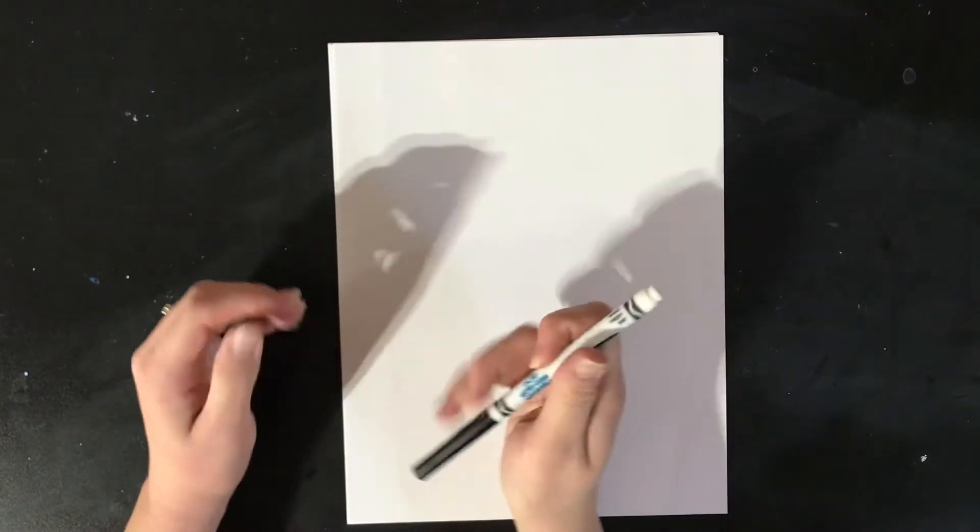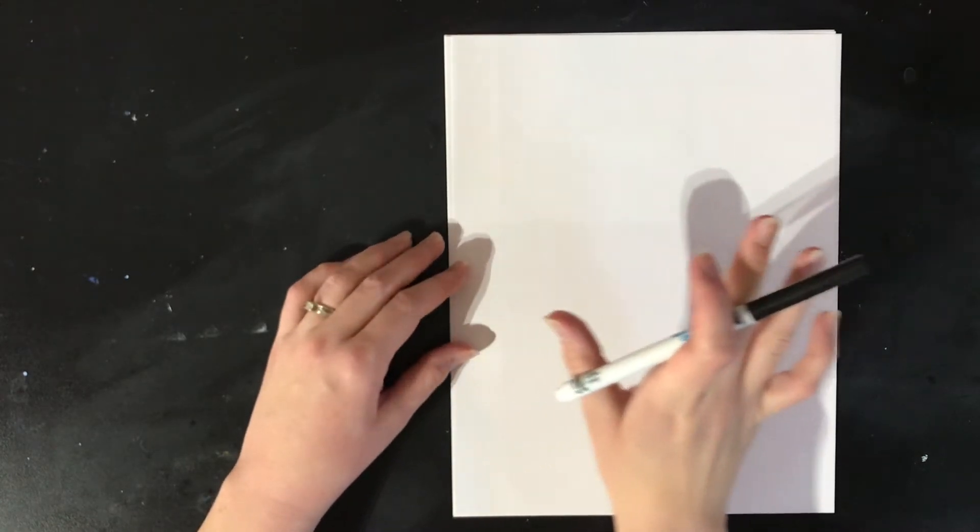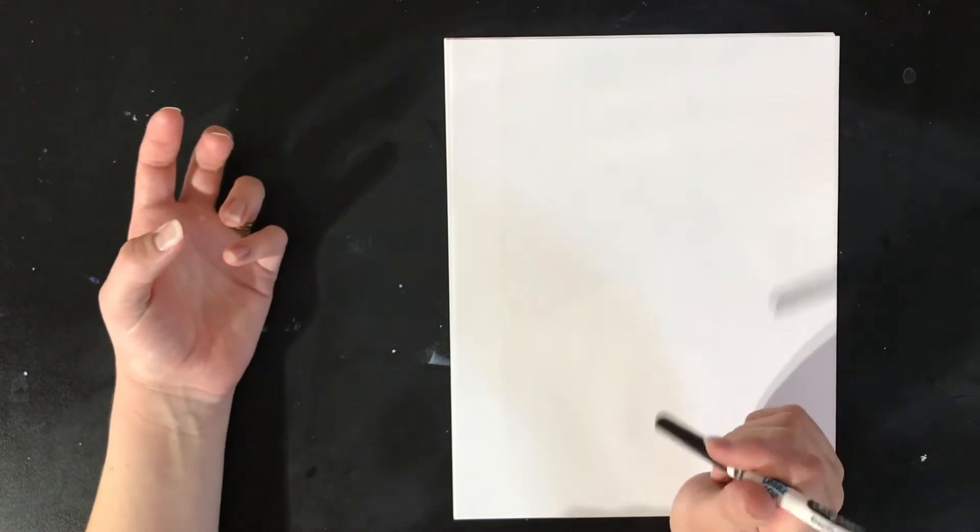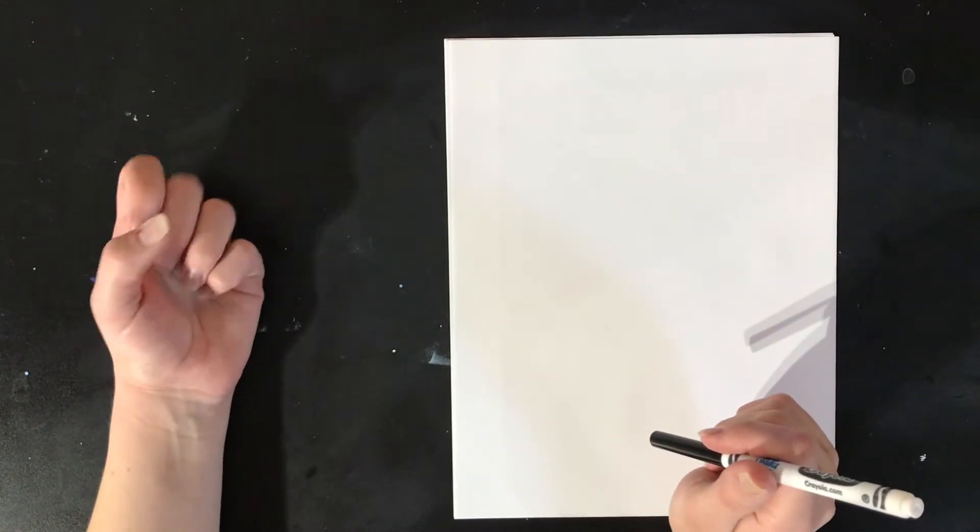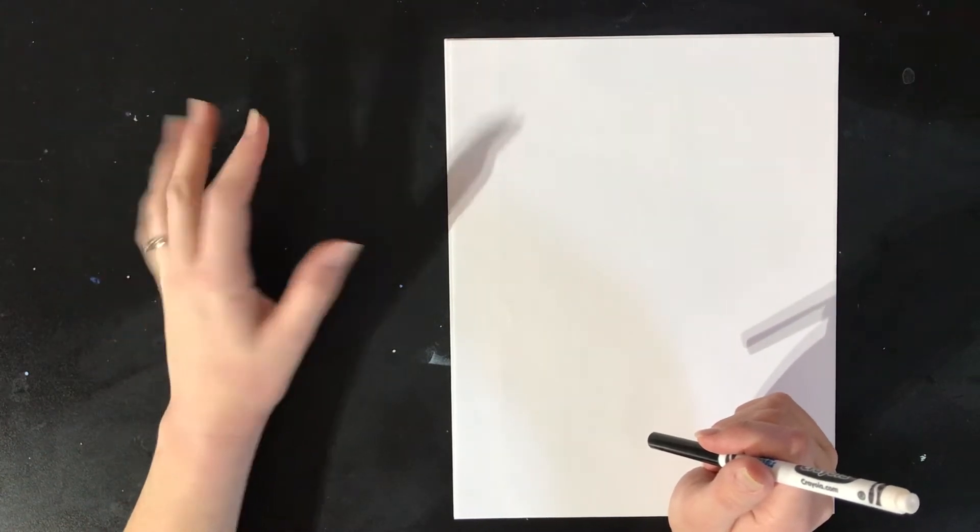Now to do this you need to just promise not to cheat and make sure that you do not look at your paper while you're drawing your hand. You're going to take your hand and make any shape you want—you can do a fist, you can have your palm up like this, you can do the back of your hand.